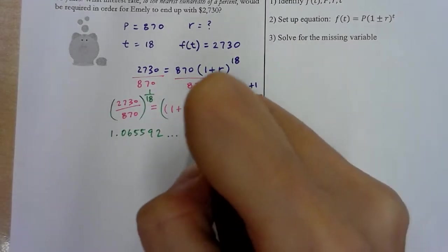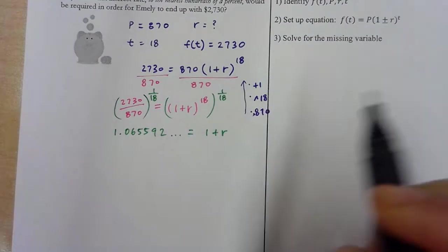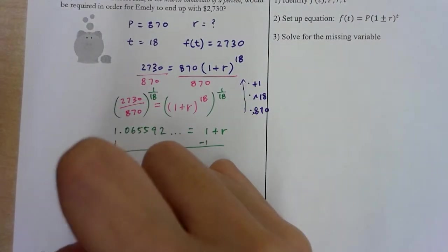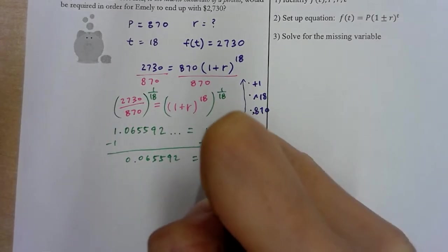So I got 1 plus r. So I'm going to subtract 1 from both sides.